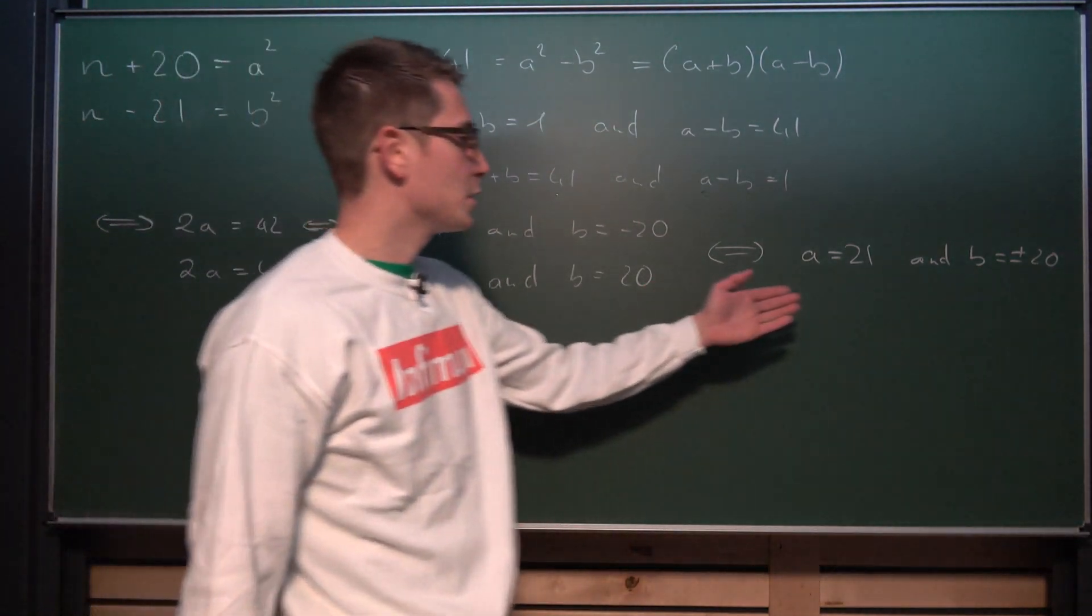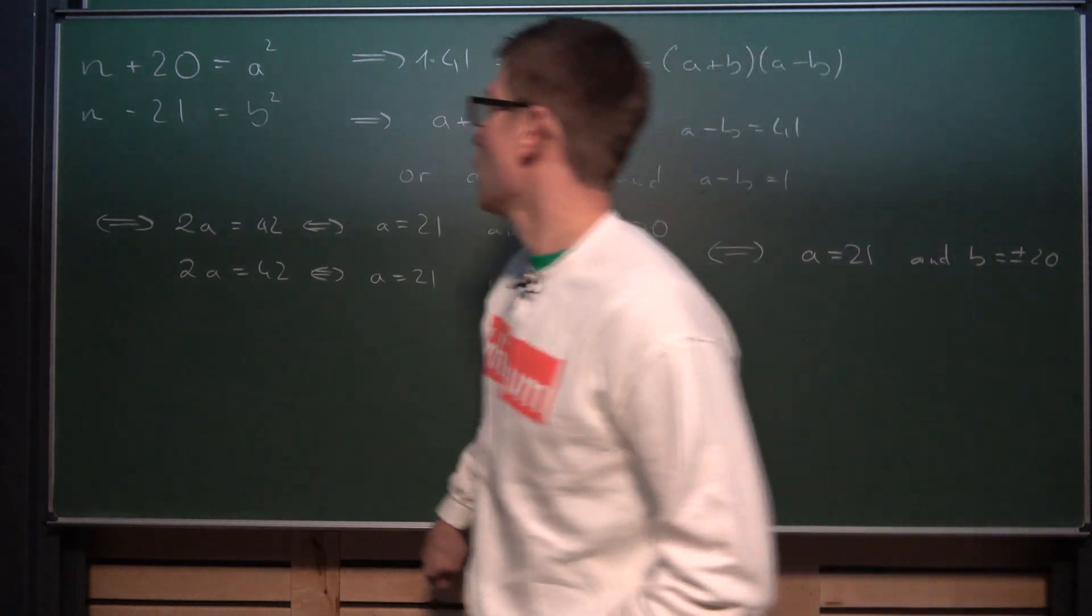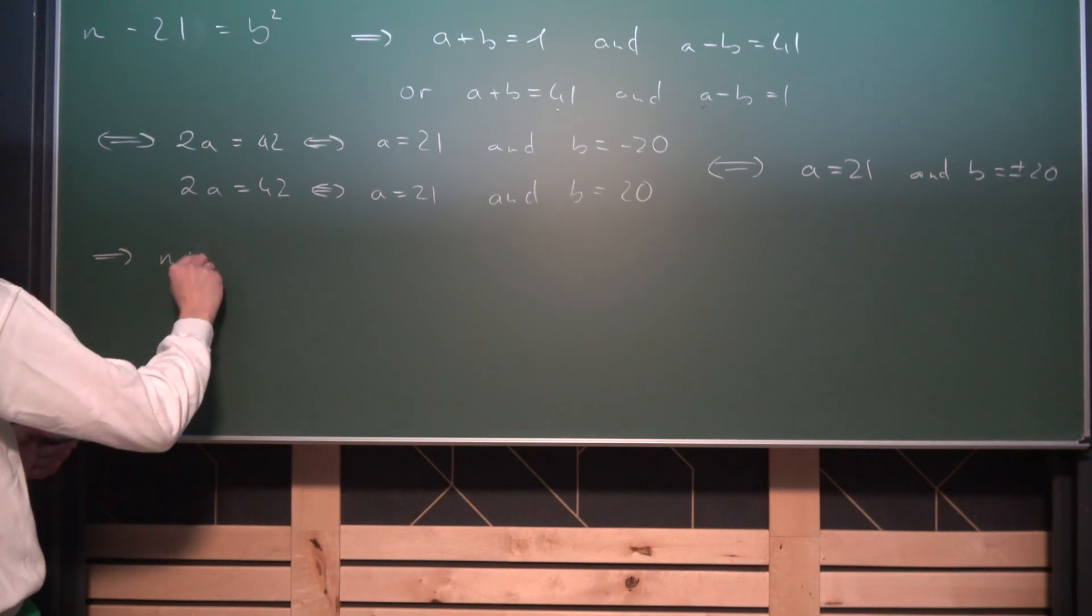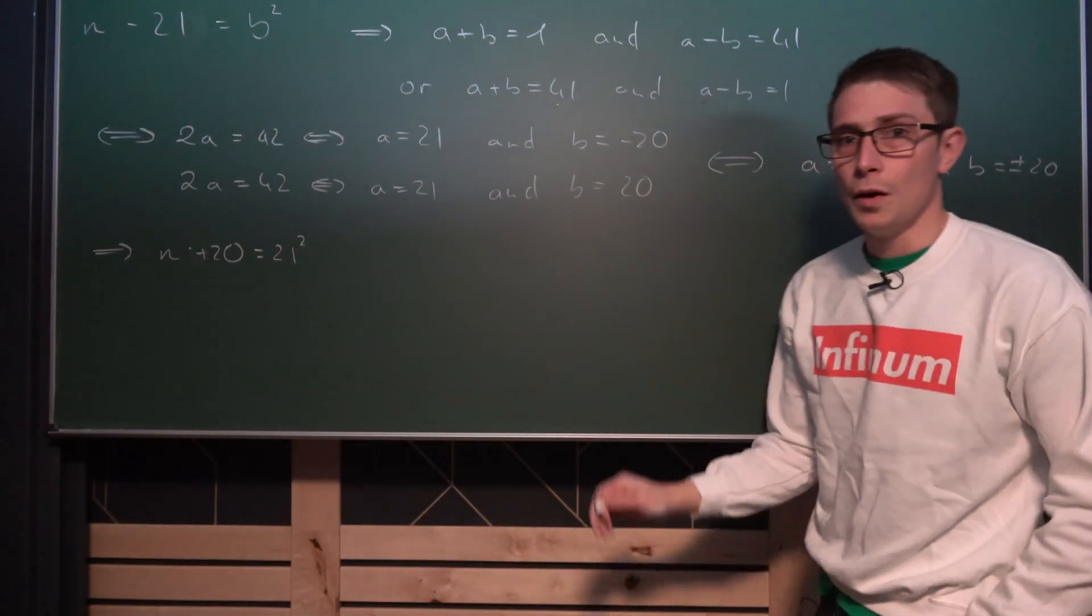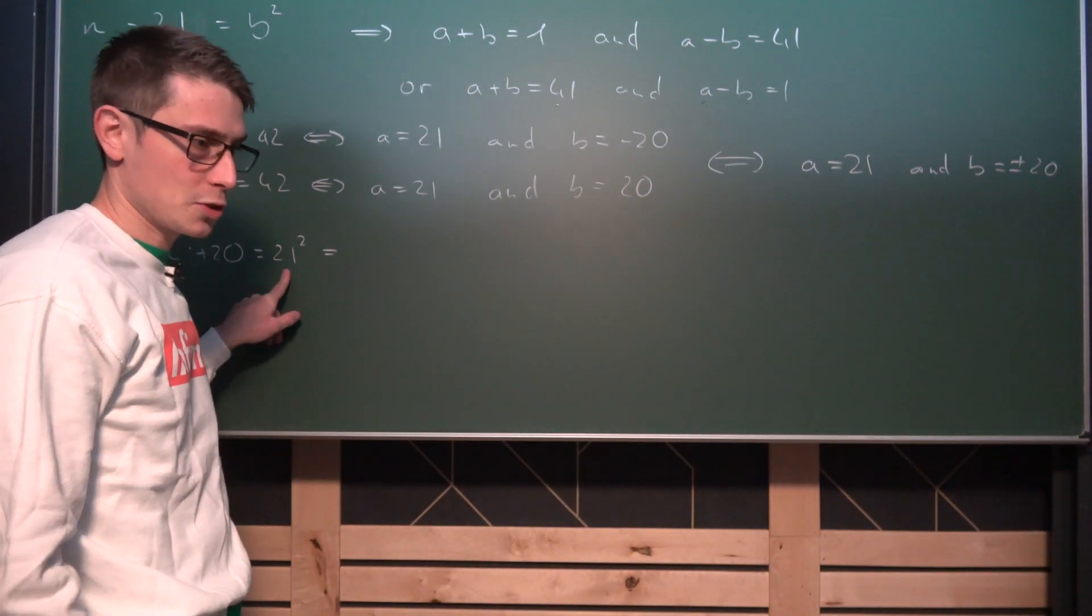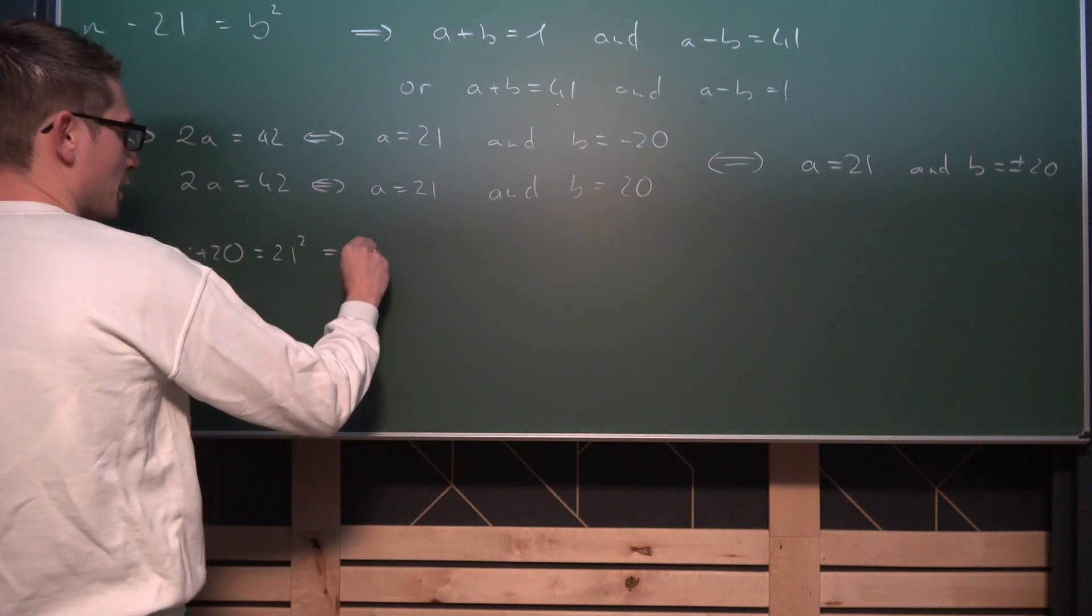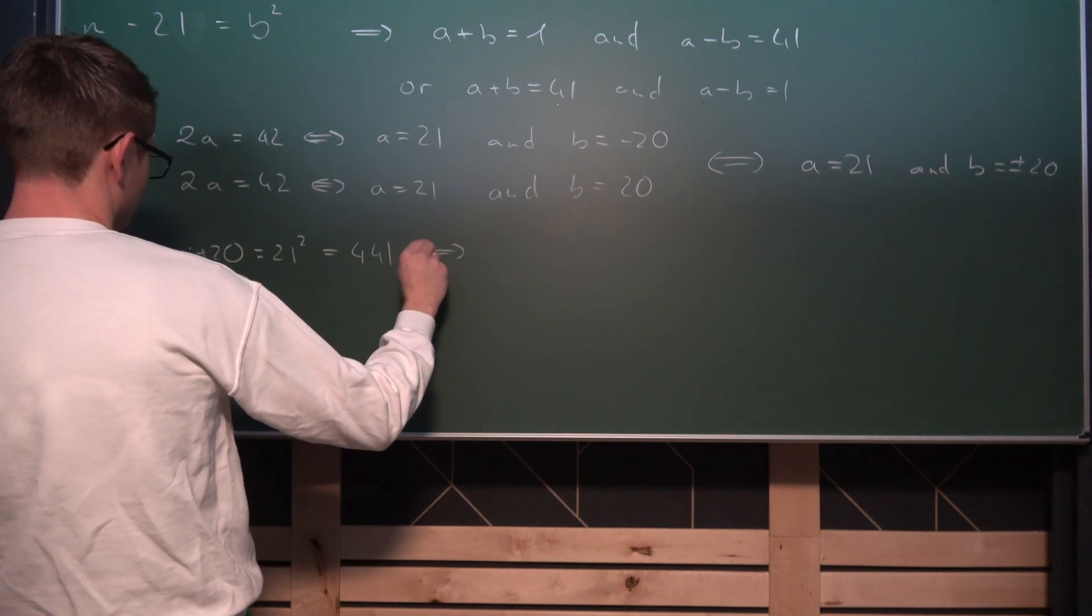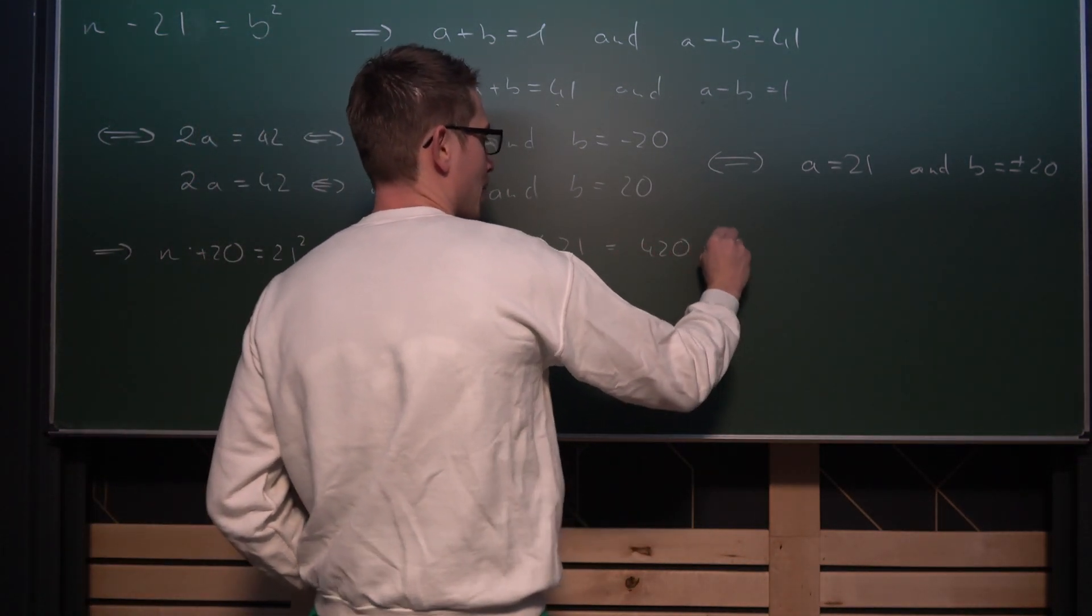And with that out of the way we can just plug those two values into either of these equations and then we are done. If you plug the value of A in here, we are going to get that N plus 20 is equal to 21 squared. Now 21 squared, let me think about that. 21 times 20 is going to give us 420, 420 plus 21 is going to give us 441. Meaning if we subtract 20 on both sides, we are going to get that N is equal to 421, or if you want it in a nicer form, 420 plus 1.